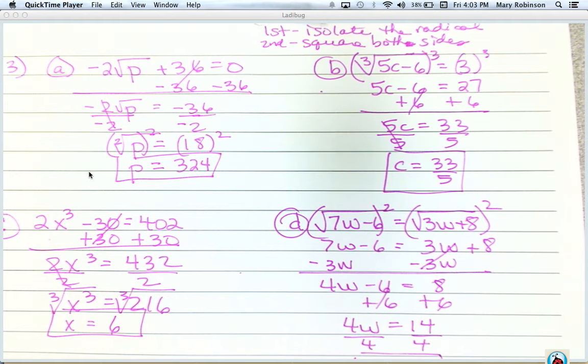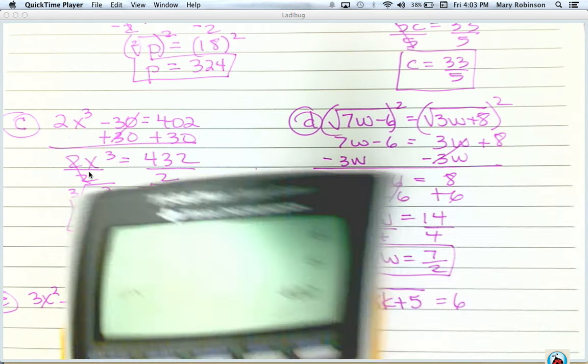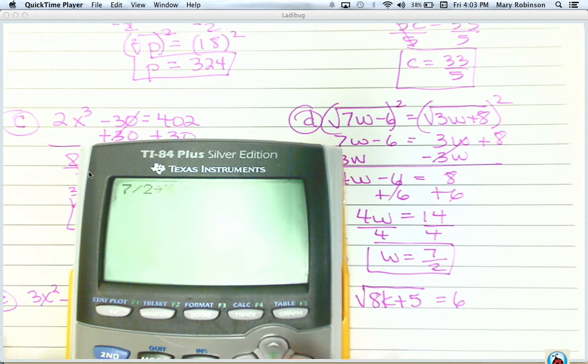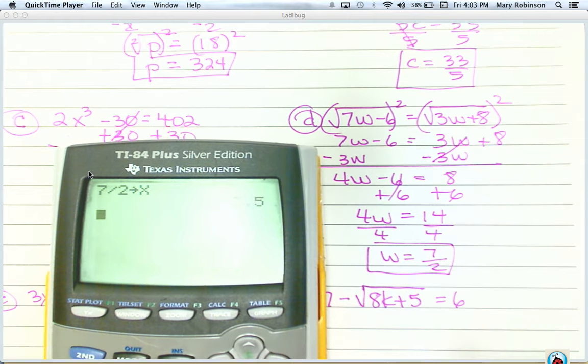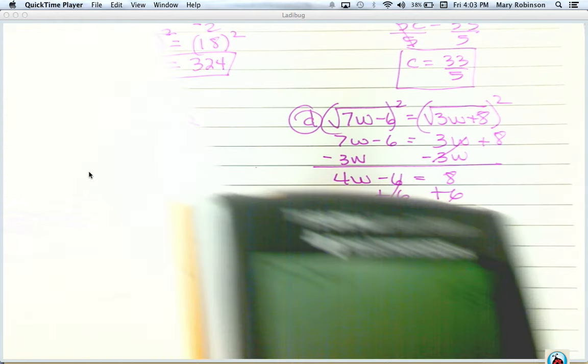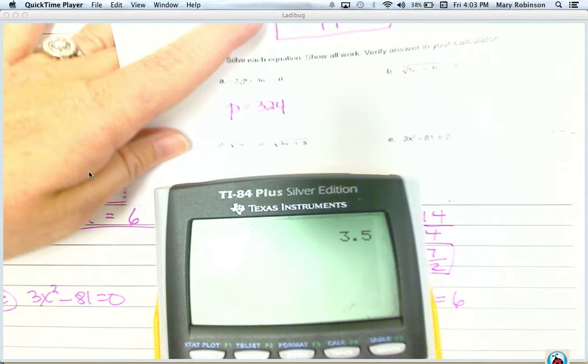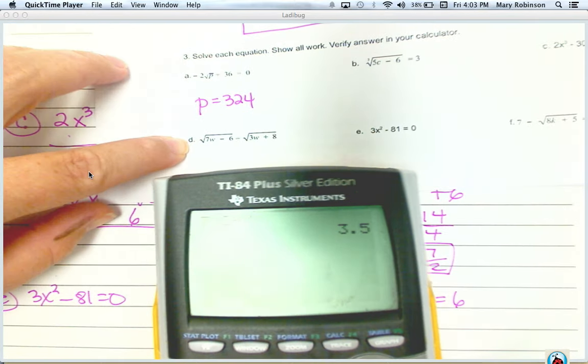So I got 7 halves. So I'm going to store it for x. And this time I have my variable on both sides, so I simply need to type in the square root of those on both sides. So I'll look back here at D and make sure I type it in right.